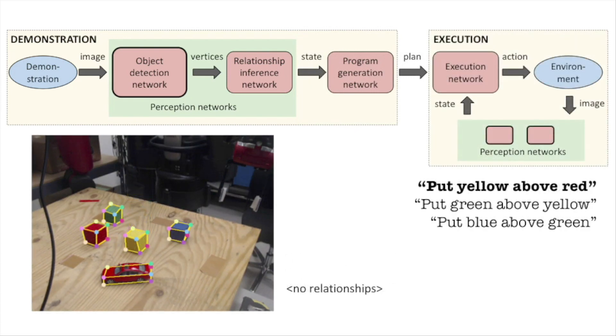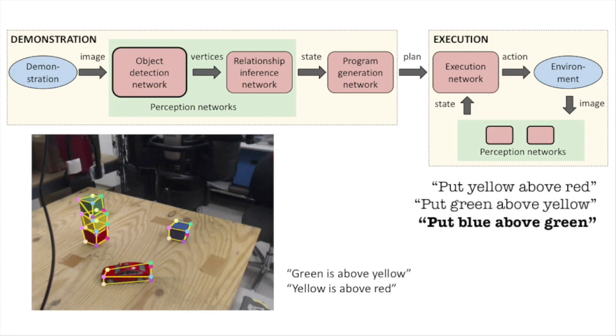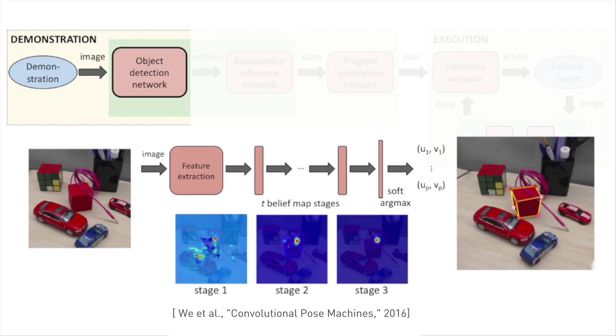Finally, the execution network guides the robot to reproduce the demonstration. Following the program, this network operates in a closed loop with the perception networks to select the correct pick and place operations.